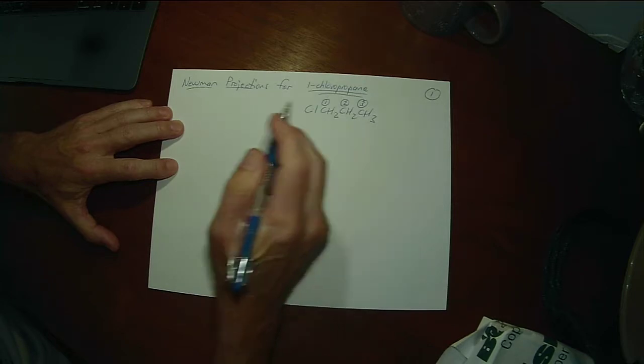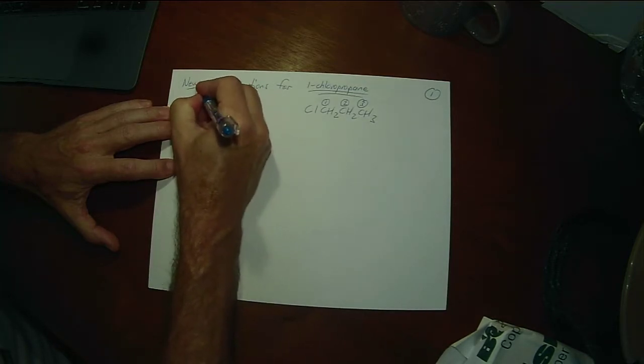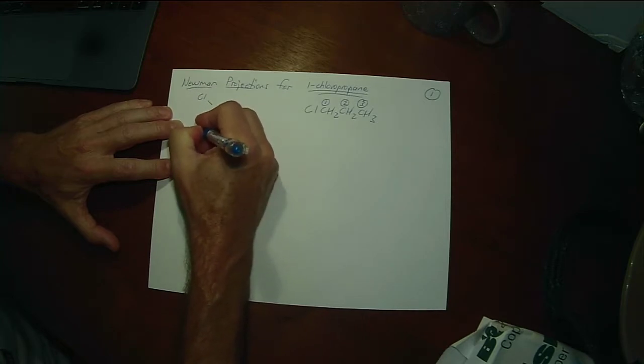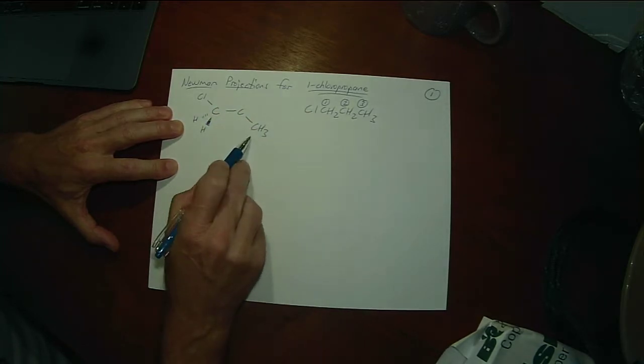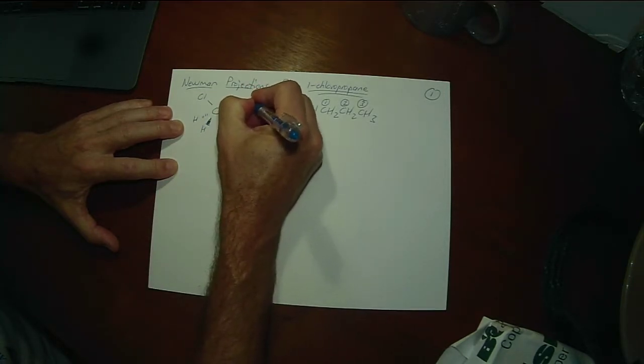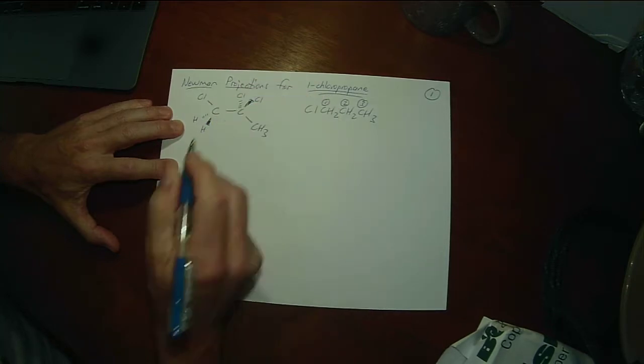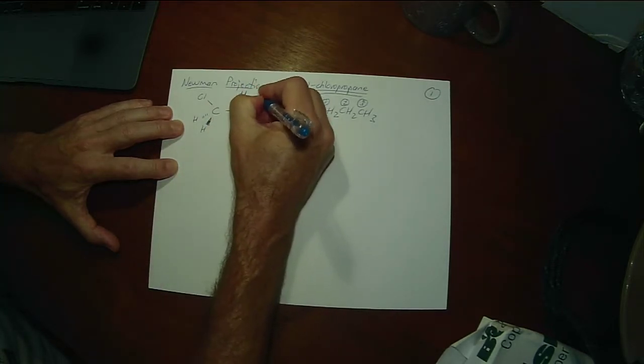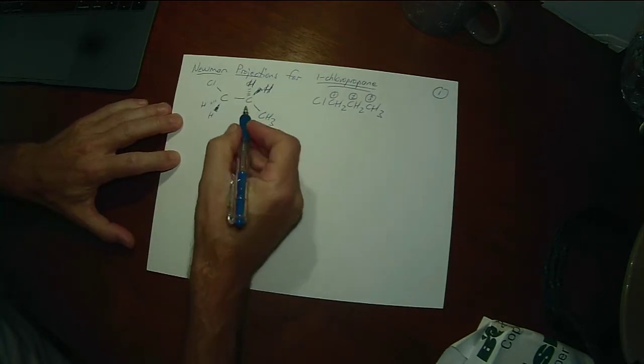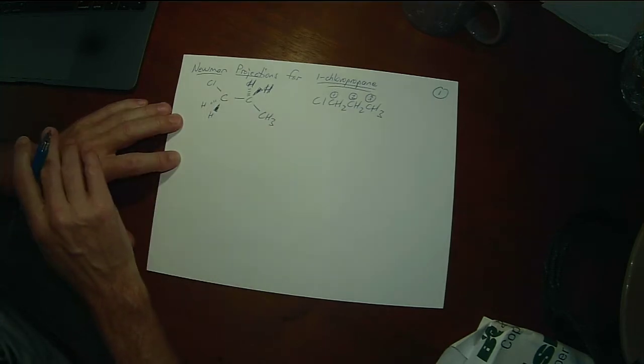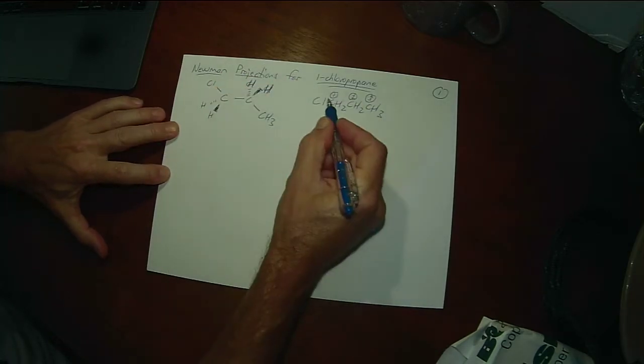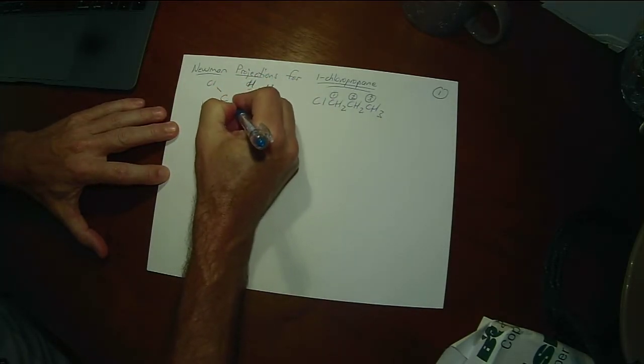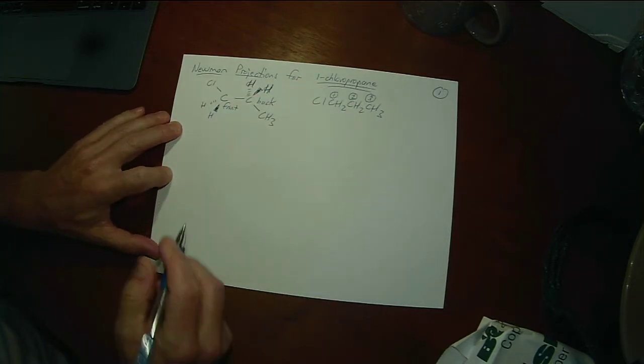The next thing I would do is take that and draw it in a full dashed-wedge structure, so you're actually showing what's attached to the two carbons that you're going to be looking down. We don't need to show the dashed wedge on carbon 3 because we're not actually looking down that bond. So we've got a Cl on the first carbon and a CH3 on the second carbon and all the other substituents are hydrogen. So then we want to look down the bond from C1 to C2. This will be my front carbon and this will be my back carbon.